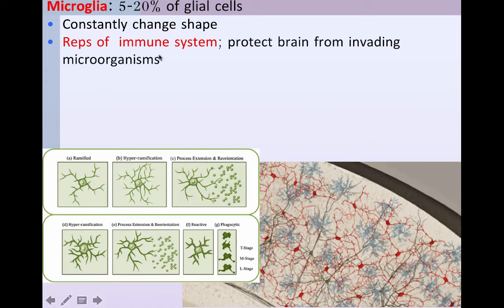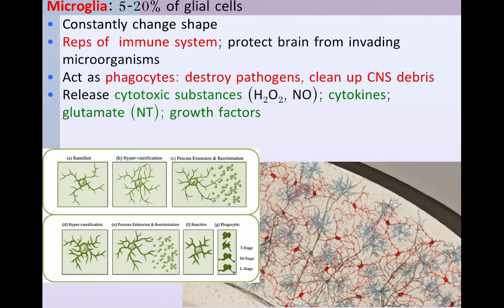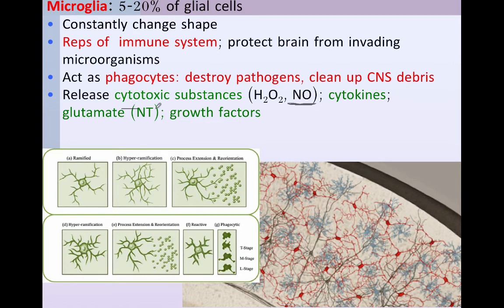Microglia are the actual representatives of the immune system in the brain and help protect it from invading microorganisms. They act as phagocytes, destroy pathogens, and help clean up debris in the central nervous system. In addition, they release cytotoxic substances — hydrogen peroxide and nitric oxide. Interestingly, nitric oxide is also a neurotransmitter, so it plays a cytotoxic role as well as a communication role. The microglia also release cytokines, which are hormone-like substances that help regulate immune system function.